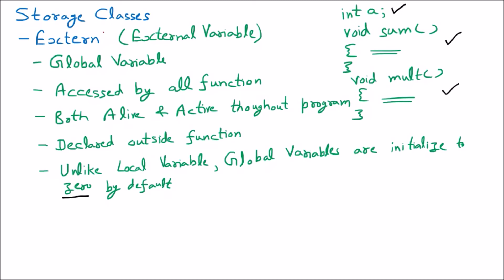To summarize: external is a storage class which can be named external variable or global variable. They are accessed by all functions because they are declared outside any function — outside function one, outside function two — so they can be accessed in sum as well as mult. They are alive and active throughout the program, and by default global variables have the value zero, unlike local variables. This is about the storage class extern.